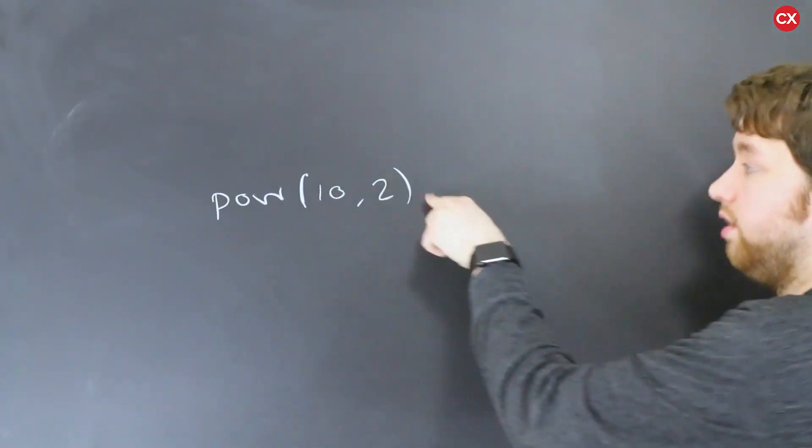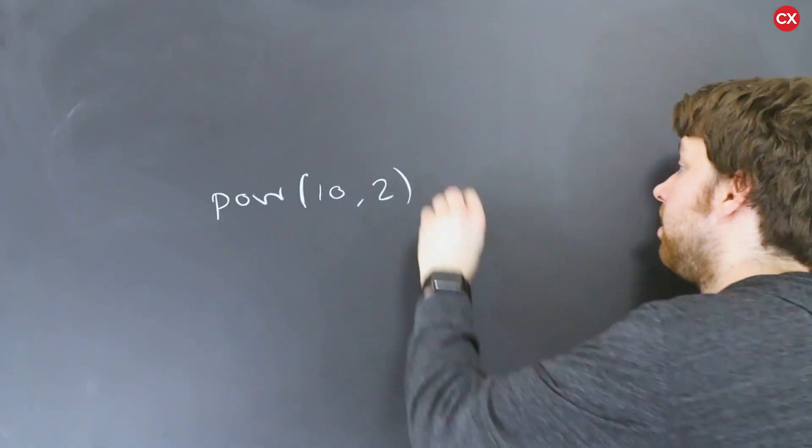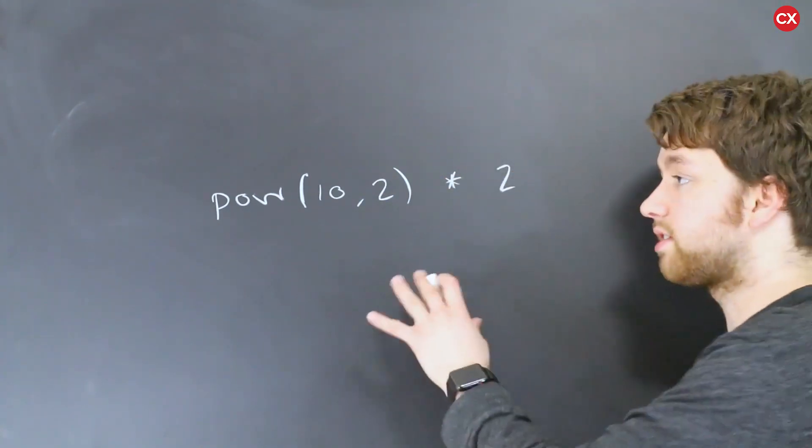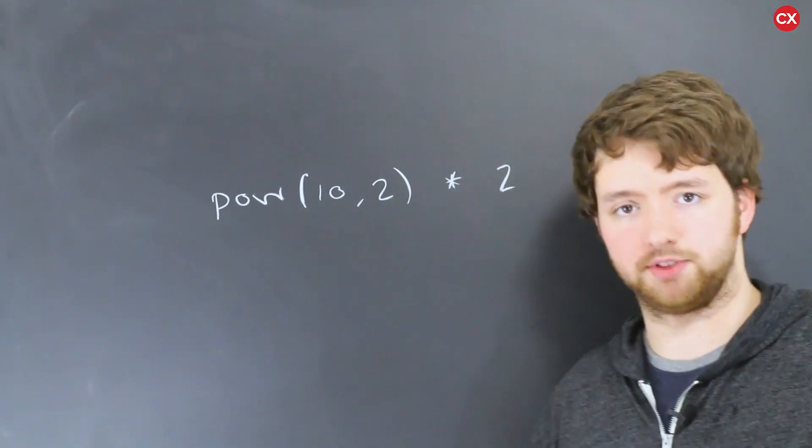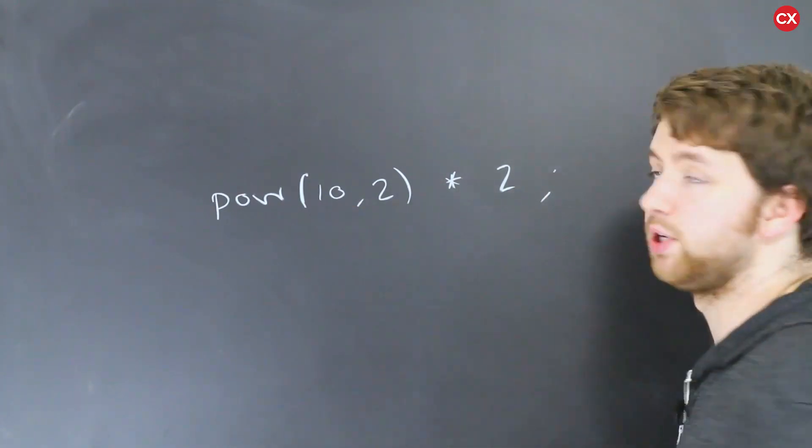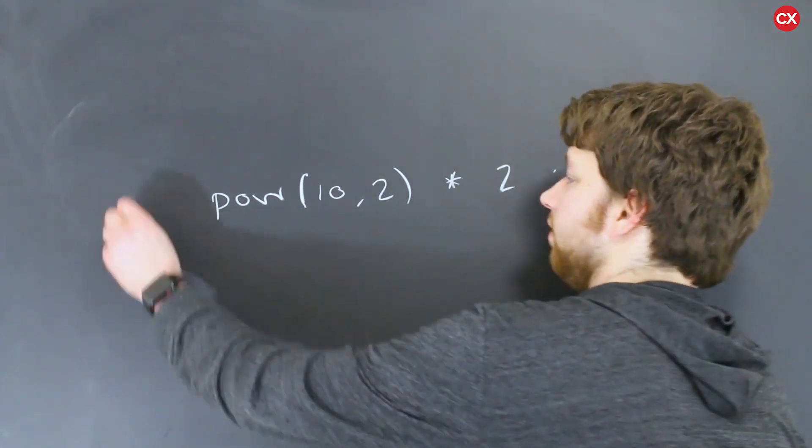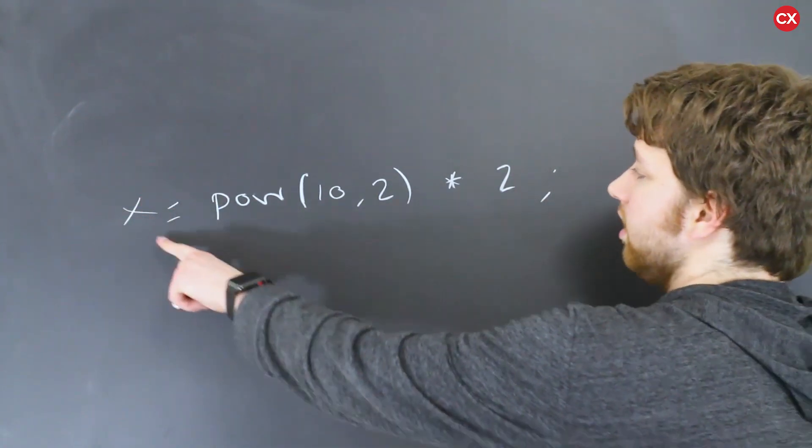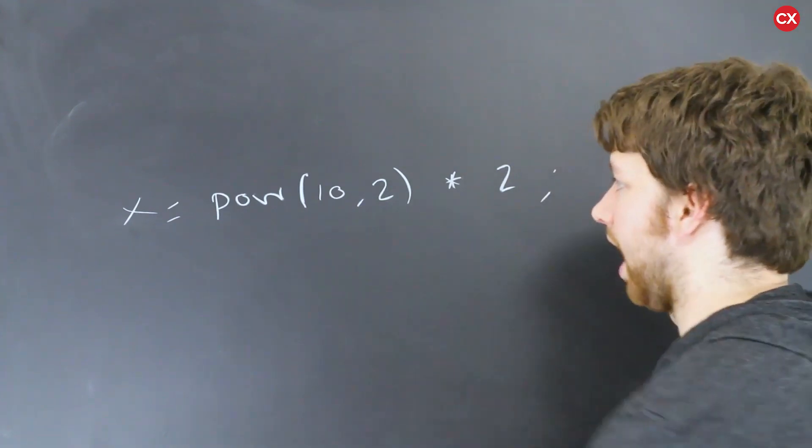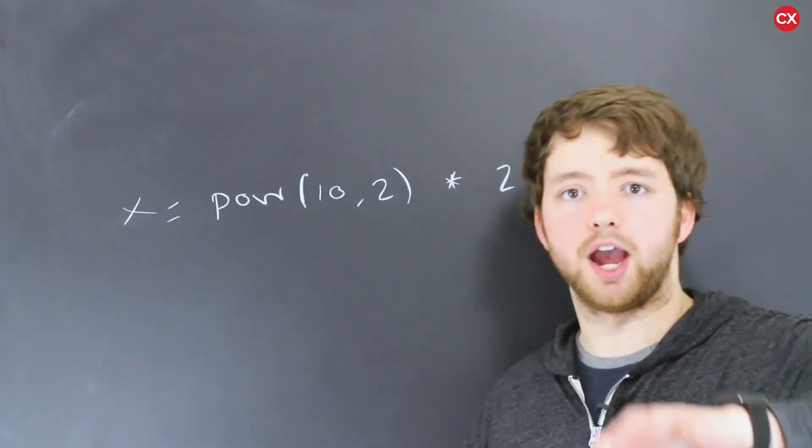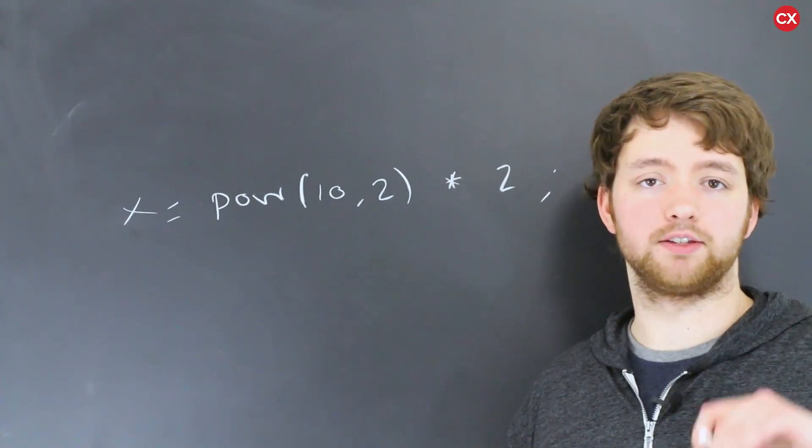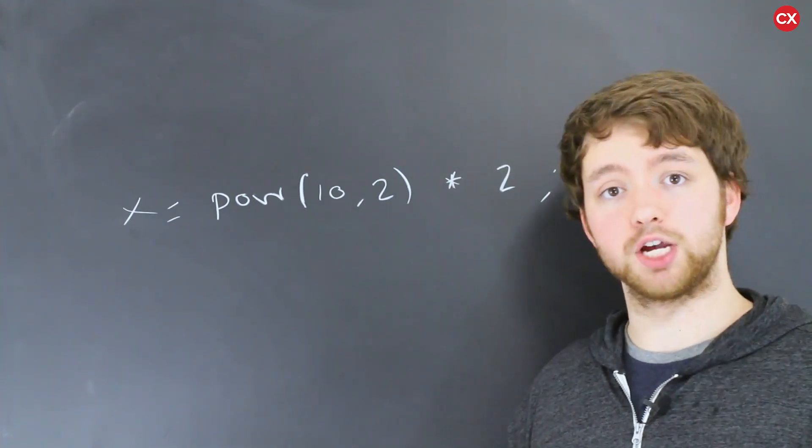We have the function call, no semicolon, we're not done. We multiply that by two. And this expression can be used inside of something else, but ultimately we're going to need to finish with a semicolon at some point. So if we wanted to figure out what that value was, we can assign it to X, X is now going to be 200, or we could output that. So we could use C out to output this entire result.